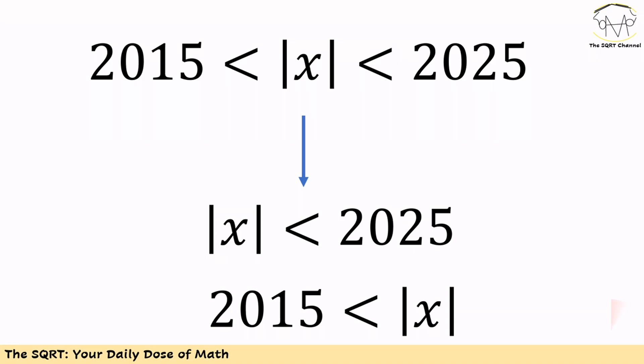Now to remove the absolute sign even further, we can write it as |x| is less than 2025 and |x| is greater than 2015.